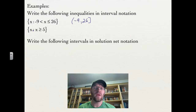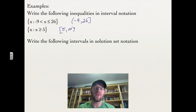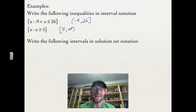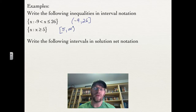The second example is x is greater than 5. We have 5 on one end going all the way to infinity on the other. When talking about infinity or negative infinity, we always use an open bracket, because infinity doesn't end — you can't say it's closed off. So it must always be an open-ended interval.